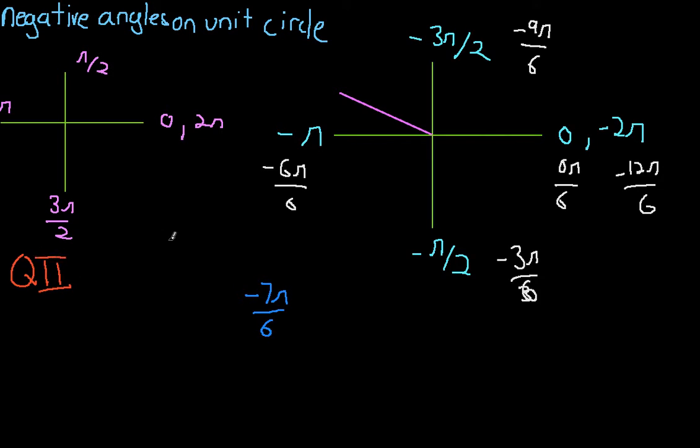Well, we know from our little device here, this 'all students take calculus' deal, that within the second quadrant, cosine is negative. So remember, we should have written this earlier, we're trying to find the cosine. Let me write this here. The cosine of negative 7π/6. Let's say that's the problem we want to do.